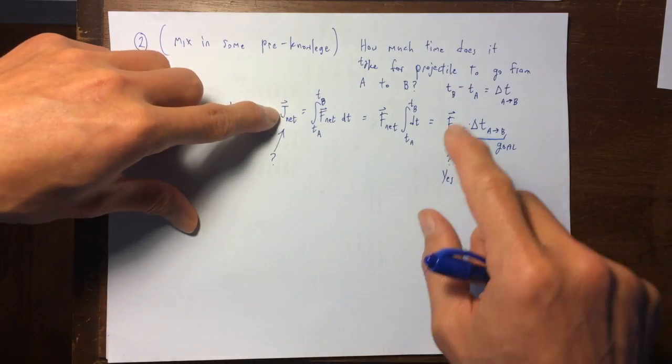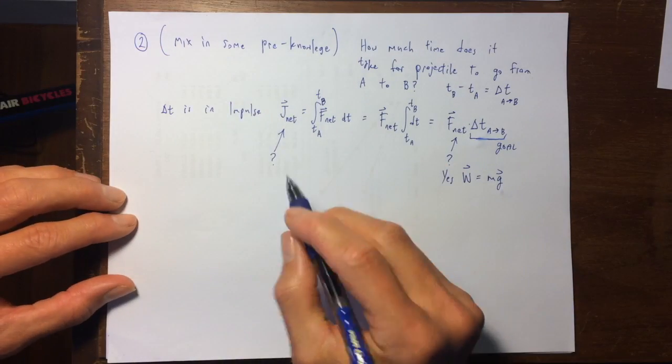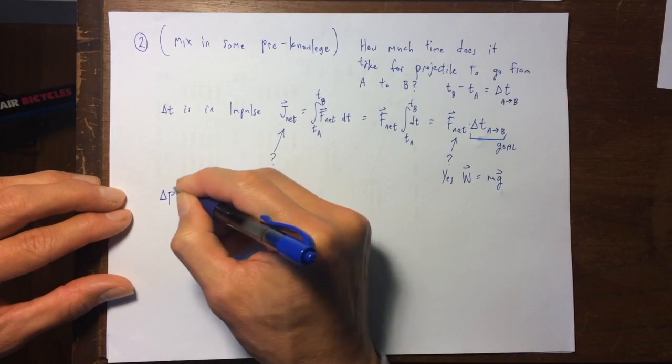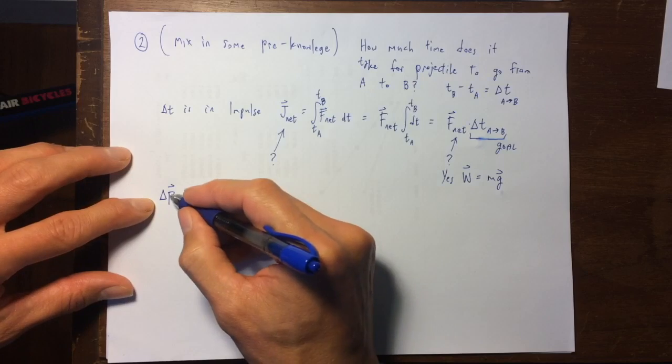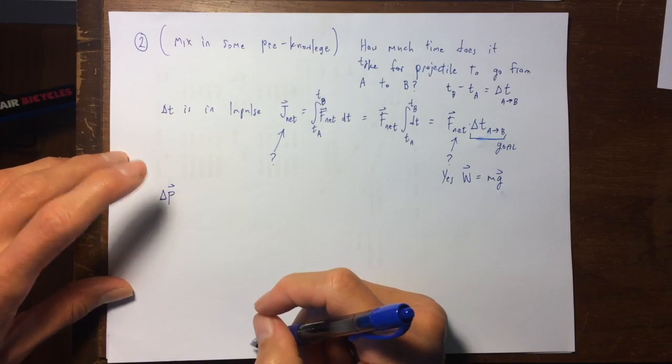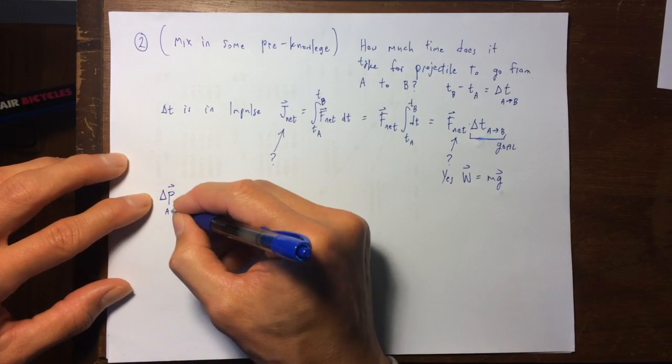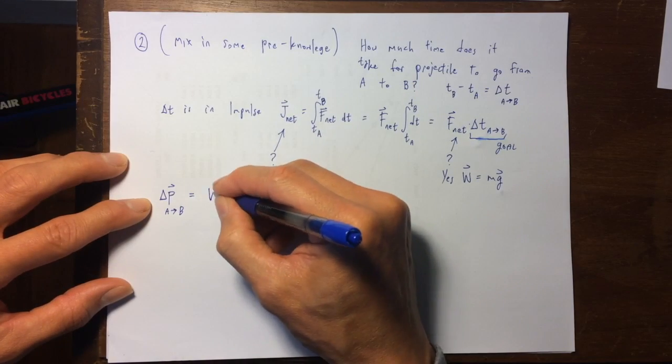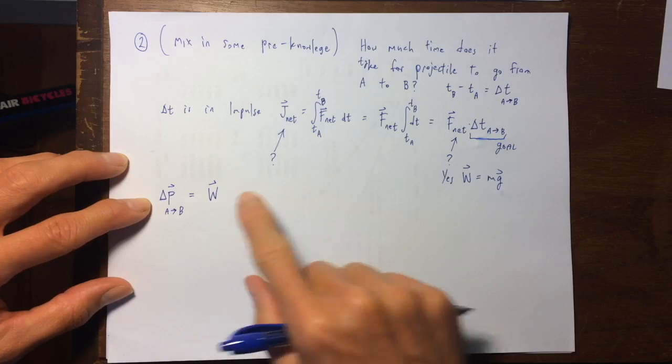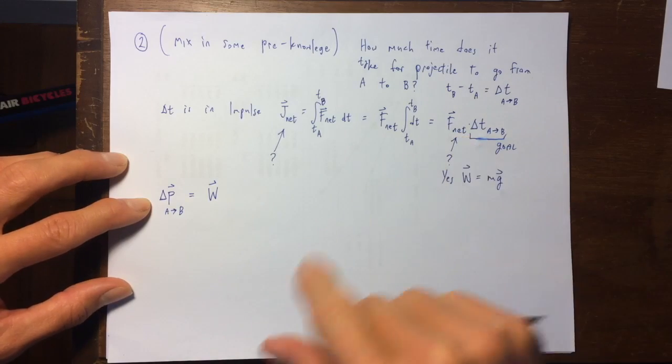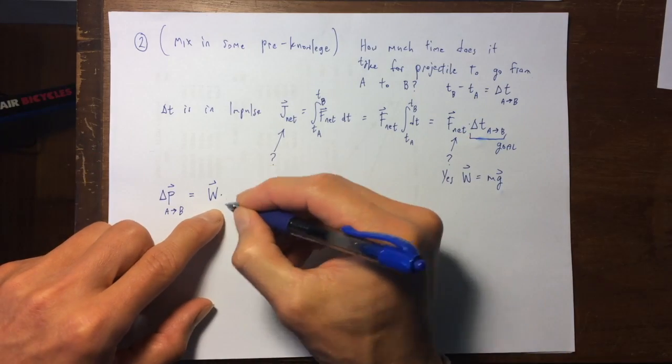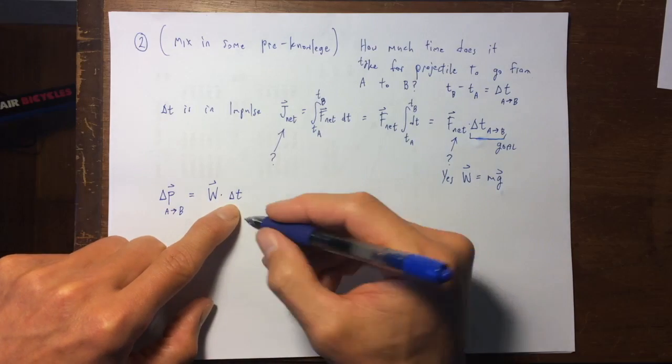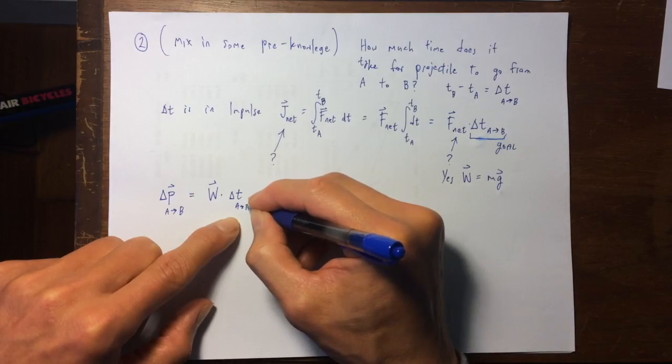Maybe something that you already know is going to be helpful. So, I'm going to use the impulse momentum theorem, that j net is delta p, so let me update my place in the problem solving or problem exploration, that delta p from a to b is equal to w, because that's what f net is, times the answer to my problem.